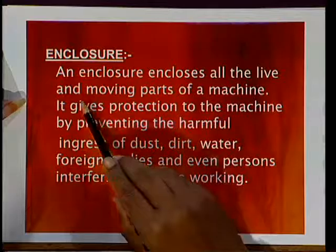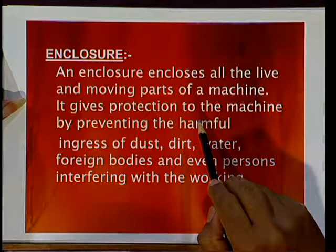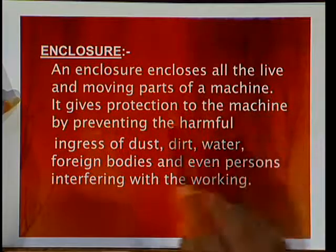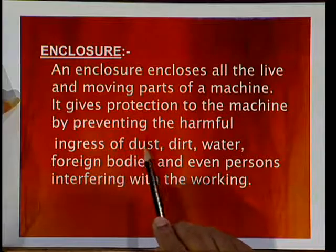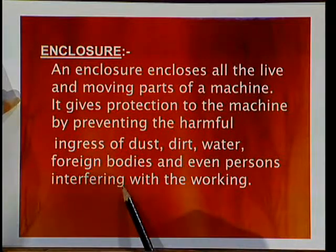Now let us go to the mechanical features. First of all, enclosures. An enclosure encloses all the live and moving parts of a machine. In motors, the live parts are the current-carrying conductors and the moving parts are the rotors. It protects from any accident and gives protection to the machine by preventing the harmful ingress of dust, dirt, water, foreign bodies, and persons interfering with the working. So this enclosure mainly protects from deposition of dust, water particles, and other foreign bodies.